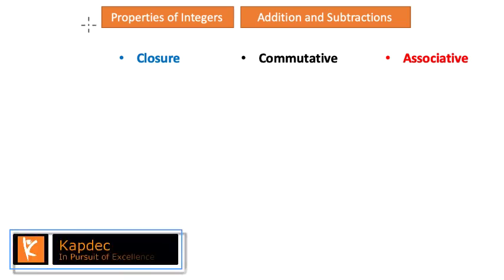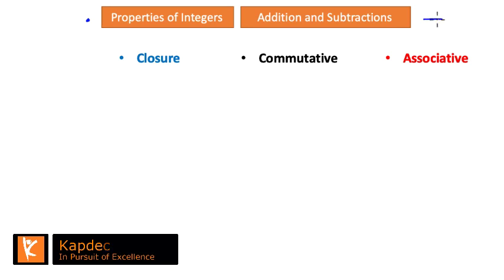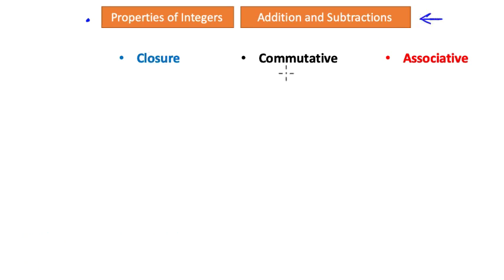Let us take a look at the properties of integers, more specifically for the operations of addition and subtraction. We are going to look at three properties: closure, commutative, and associative. We discussed all three of them while talking about whole numbers, but in this case we are going to focus our attention on integers.